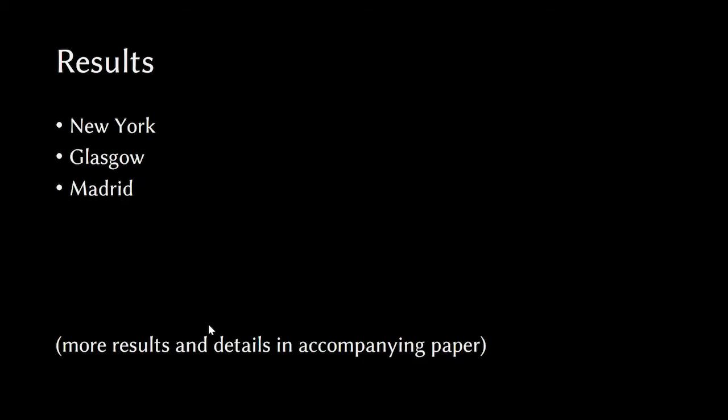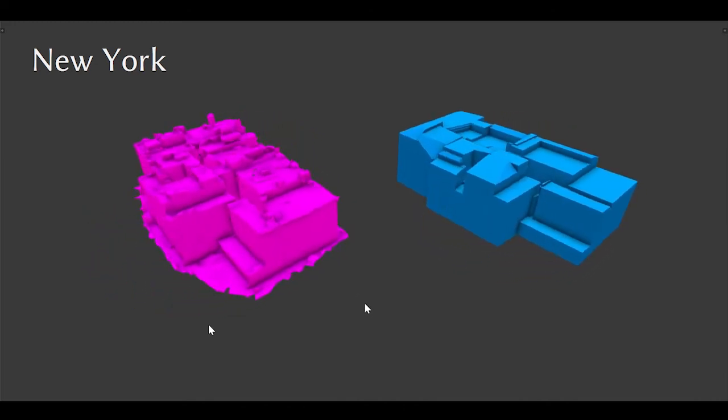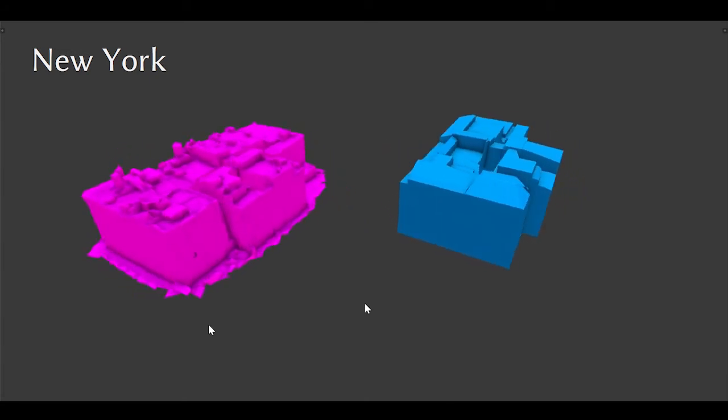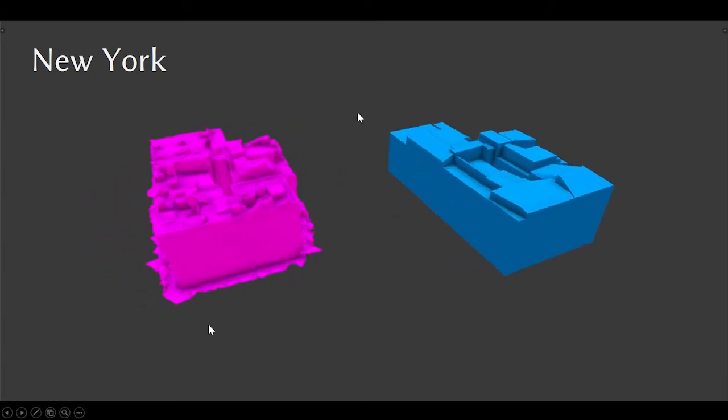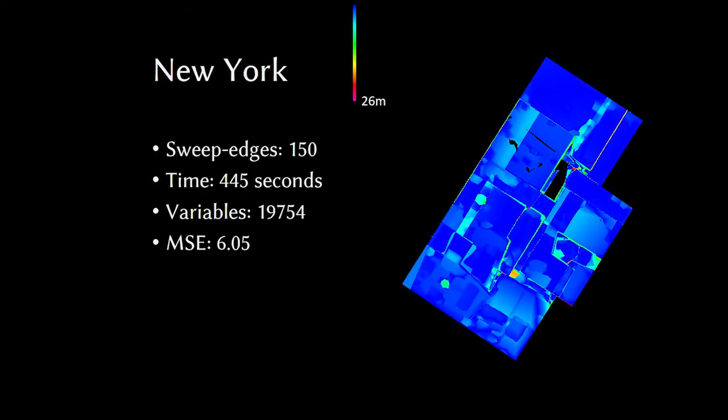Now let's have a look at some real world results from three different cities. We encourage the users to look at more results in the accompanying paper. First is New York. This is a block from lower Manhattan and we can see the rectangular shapes of the buildings and the rectangular profiles are well represented by our parameterization. We can see that away from the edges of the building where we have good GIS guidance, there are some problems with rectification of the footprint, but otherwise the results are reasonable.